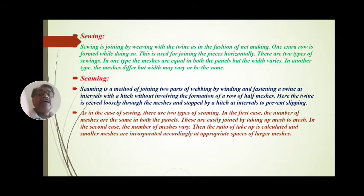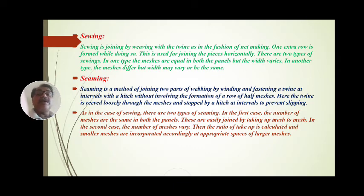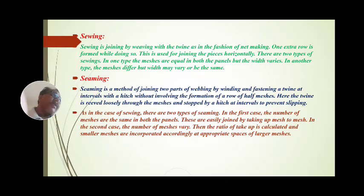In the seaming method, there are two types. In one type, meshes are equal in both the panels but widths vary. In another type, the meshes differ but the width may vary or may be the same. These are two types of seaming used for joining net webbing pieces.